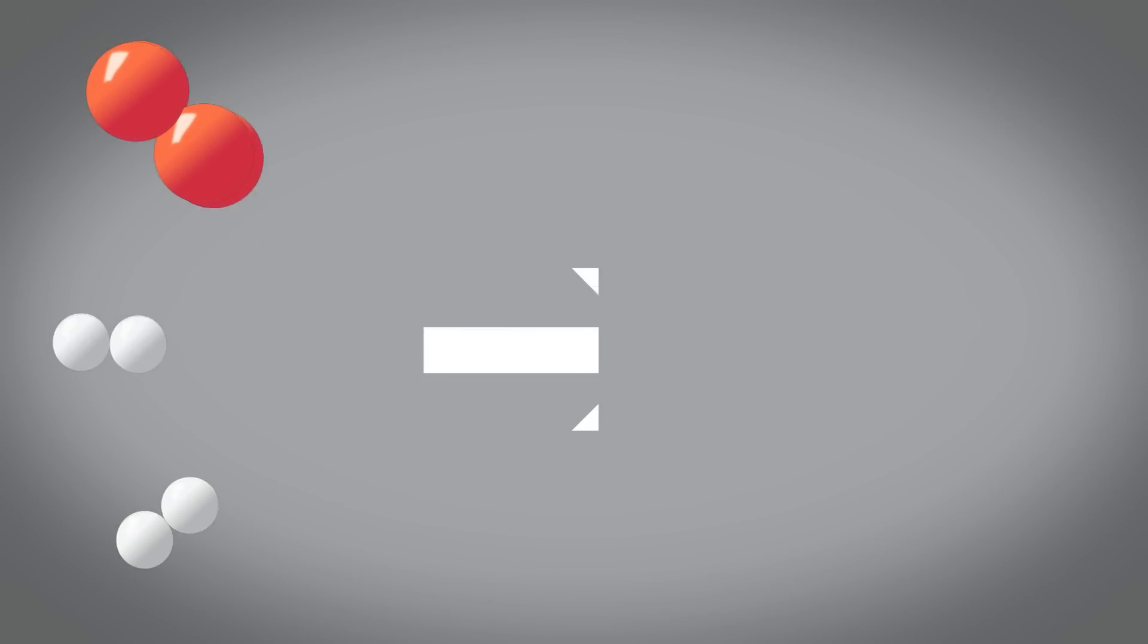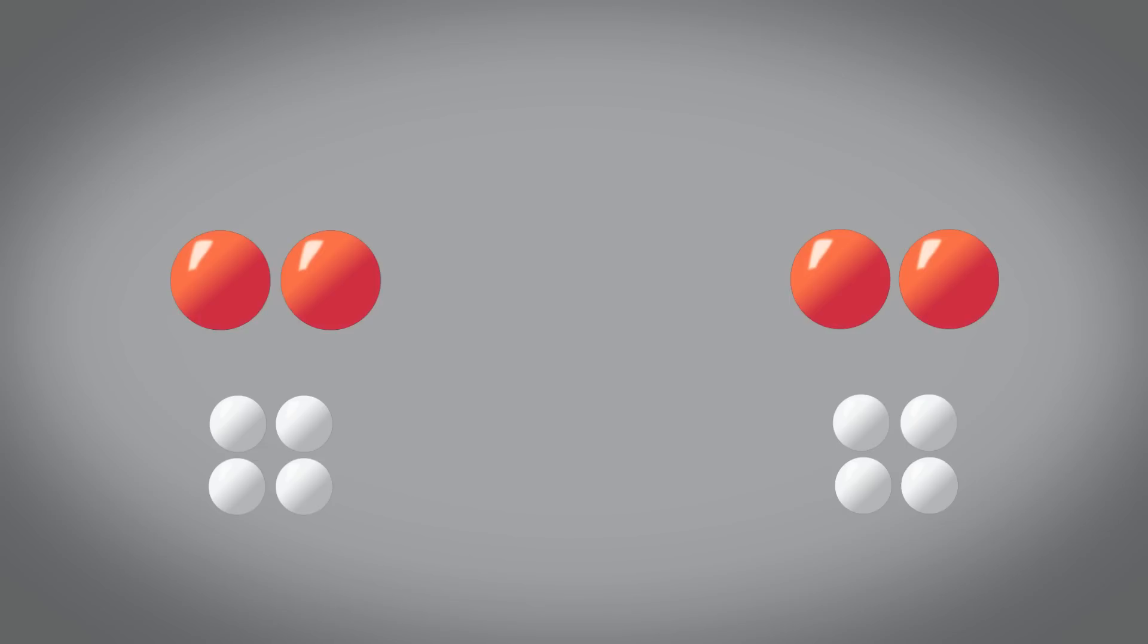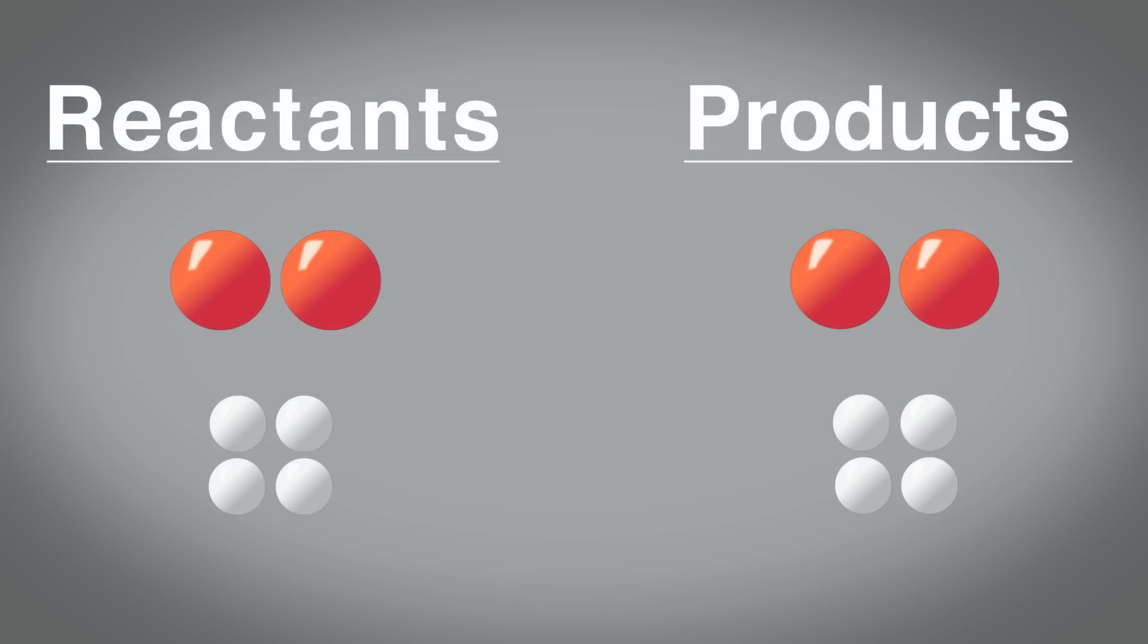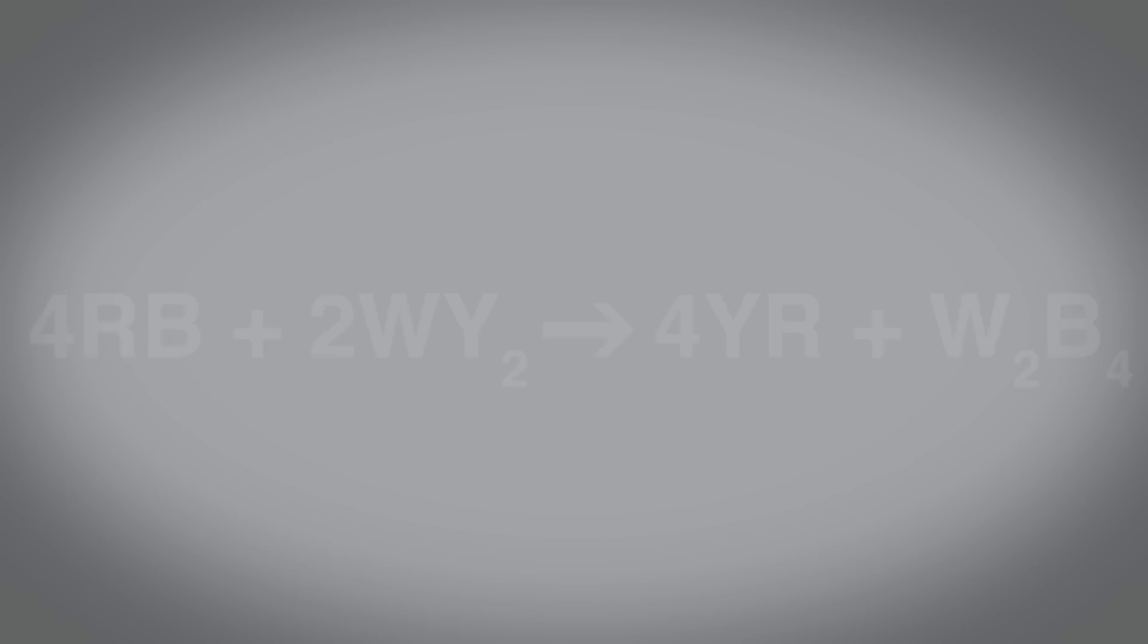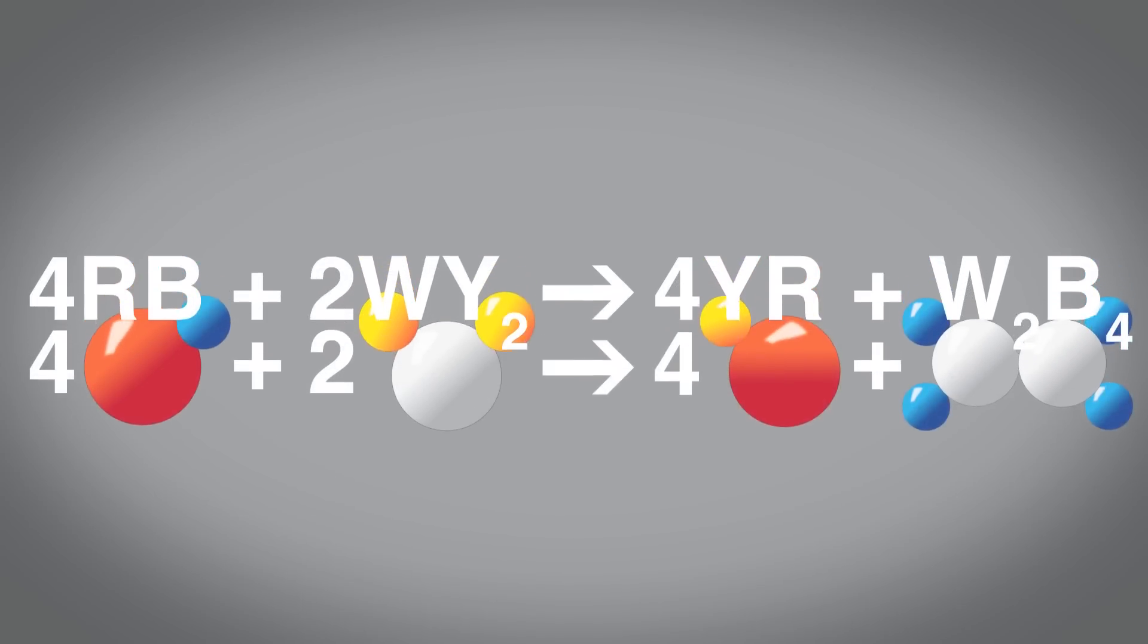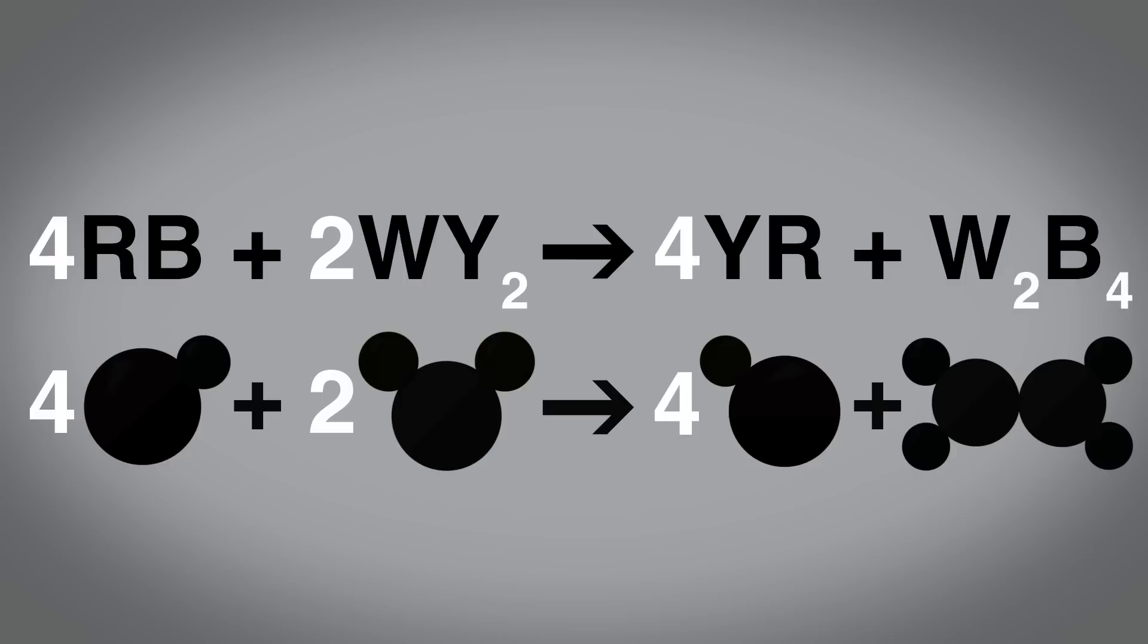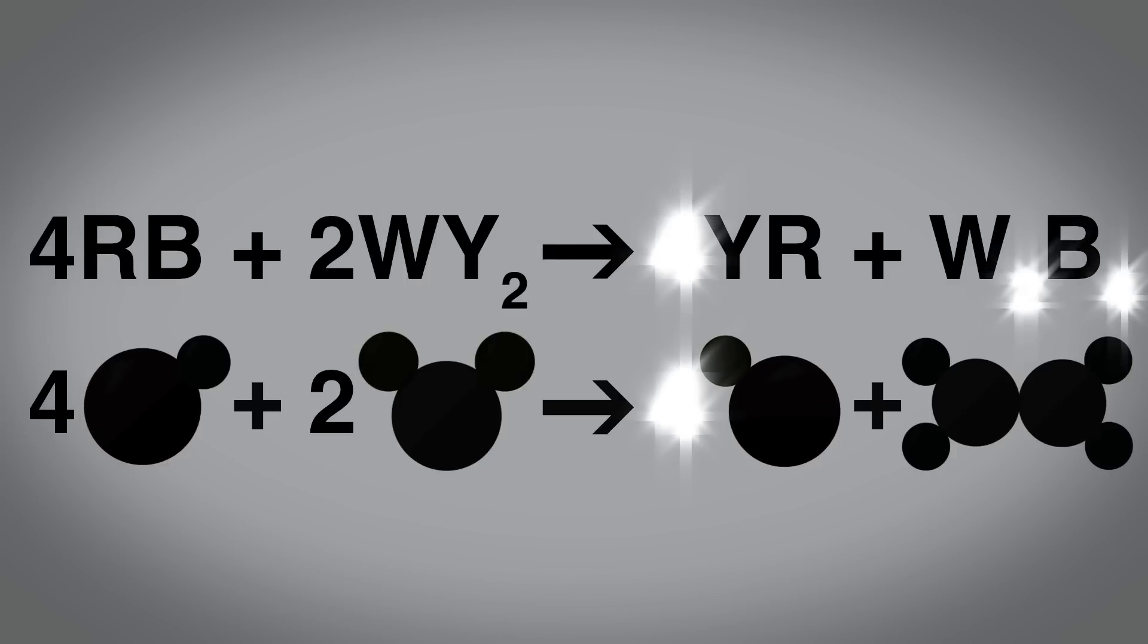In any chemical reaction, we're never creating or destroying elements. So we have the same number and type of atoms in the reactants as we do in the products. And because of that, we know that there's a certain relationship between the ratios of the starting material and the ratios of the final material.